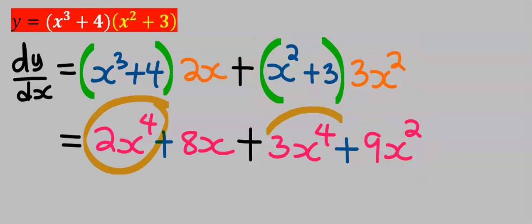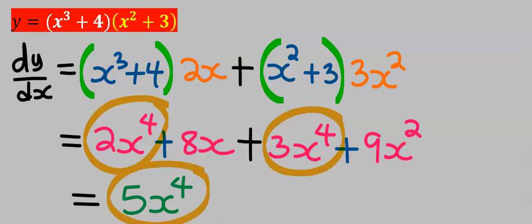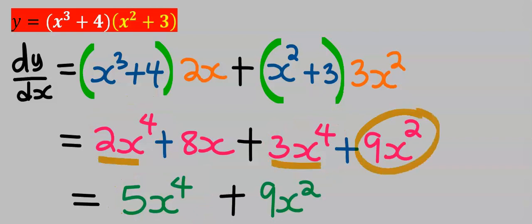2x to the power of 4 can add 3x to the power of 4, and you will get 5x to the power of 4.